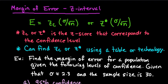When you're finding confidence intervals, it's really important to understand what the margin of error is. The margin of error is simply the distance from your point estimate to your two endpoints of your confidence interval.